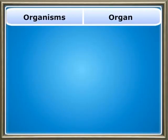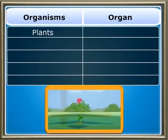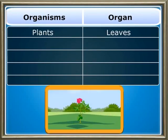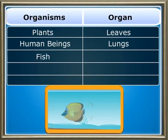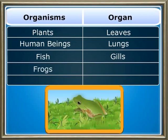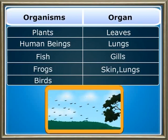Let us look at pictures of organisms with their unique respiratory organs. Plants respire through leaves. Fish respire through gills. Frogs respire through their skin and lungs. And human beings and birds respire through their lungs alone. In plants, the respiratory organs are leaves. In human beings and birds, the respiratory organs are the lungs. In fish, the respiratory organs are the gills. In frogs, skin and lungs are the respiratory organs.